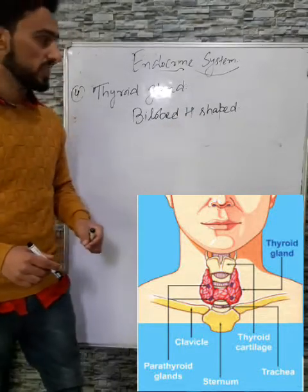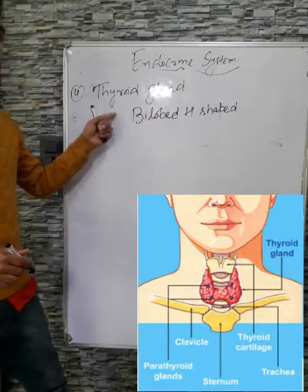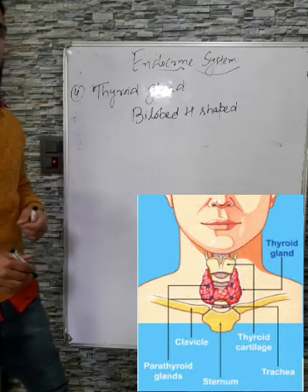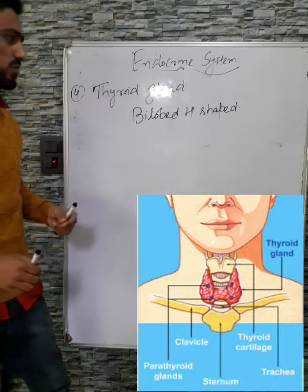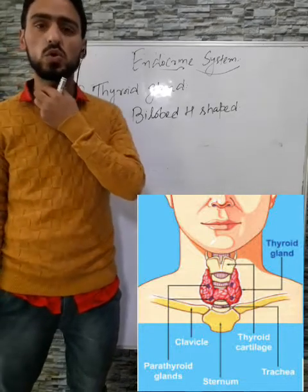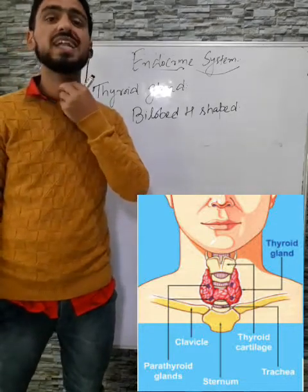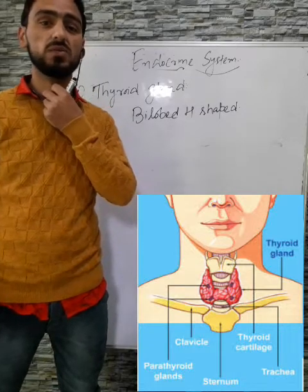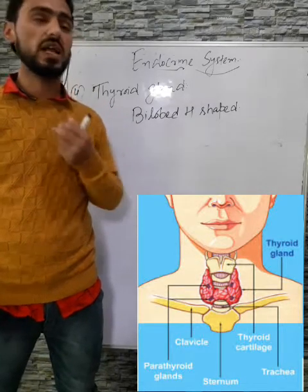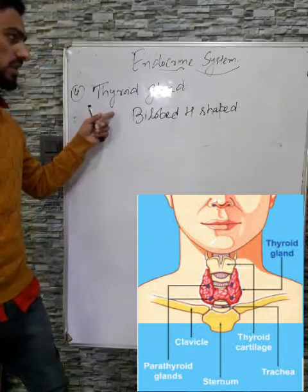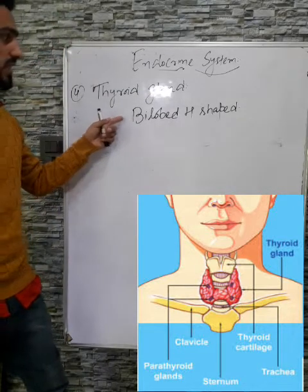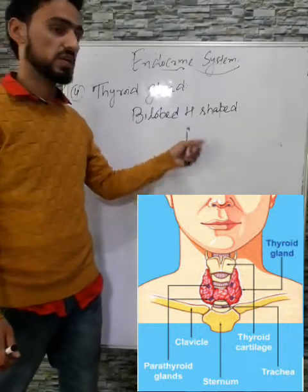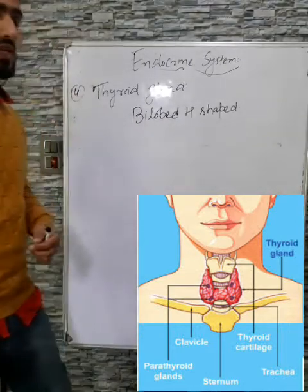The thyroid gland is located in the throat region, below the larynx and in front of the trachea (windpipe). This is a bi-lobed, H-shaped gland and it is the largest endocrine gland.